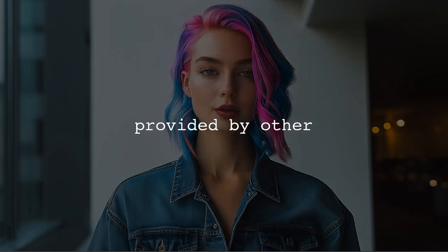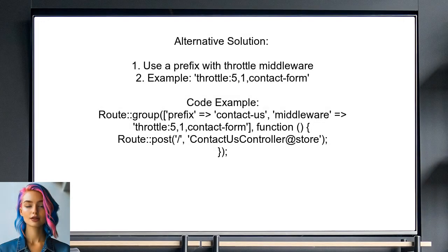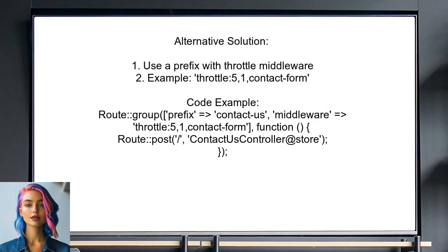Now let's look at the answers provided by other users. An alternative solution suggests using a prefix to prevent conflicts with the global throttle settings in Laravel. They recommend using the throttle middleware with a prefix like throttle:5,1 with a prefix to set a specific limit for certain routes.